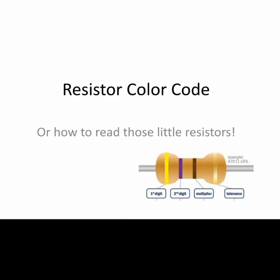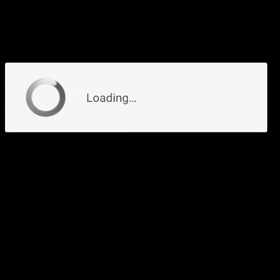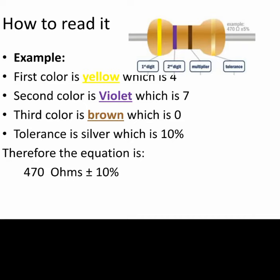Now let us check how to read a small resistor. For example: the first color is yellow, which means 4. The second color is violet, which is 7. The third color is brown, which is the multiplier ×10. The tolerance is silver, which is ±10%. Therefore, this gives 470 ohms plus or minus 10%.